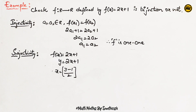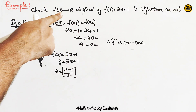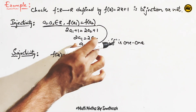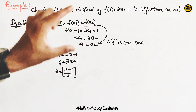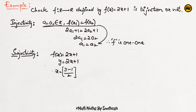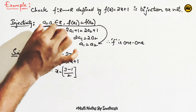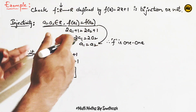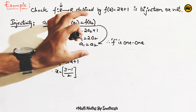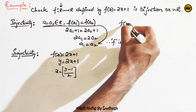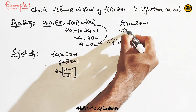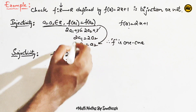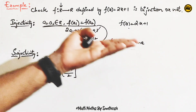First, check injection. We take a1, a2 belonging to R. If f(a1) = f(a2), then 2a1 + 1 = 2a2 + 1. The +1 cancels and the 2 cancels, so a1 = a2. Therefore, f is one-one.